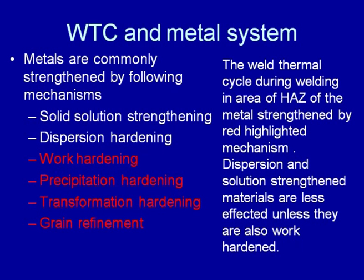Starting with the effect of the weld thermal cycle on metal systems — for engineering purposes we use a variety of metal systems strengthened using different mechanisms. In steels, strengthening can be achieved by solid solution strengthening, dispersion hardening, work hardening, precipitation hardening, transformation hardening, and grain refinement. Similarly, aluminum alloys can be strengthened by solid solution strengthening, dispersion hardening, or other mechanisms. Depending upon the strengthening mechanism used in a particular metal system, the effect of the weld thermal cycle is governed accordingly.